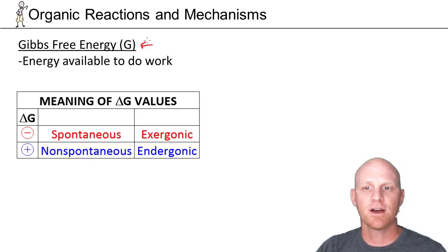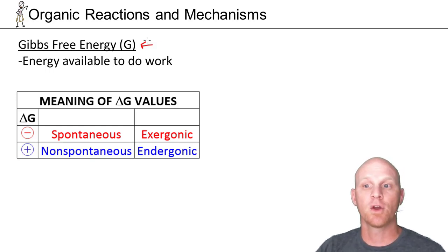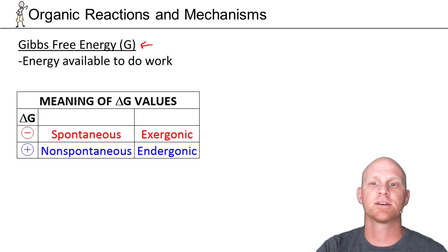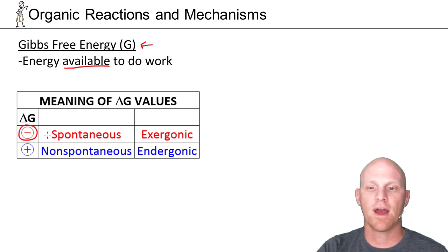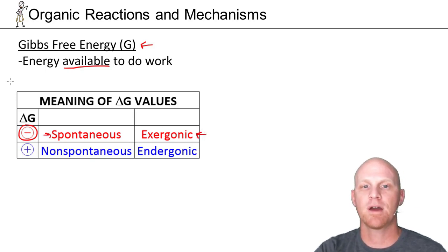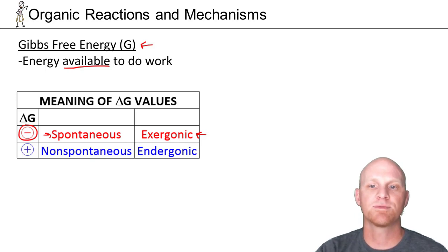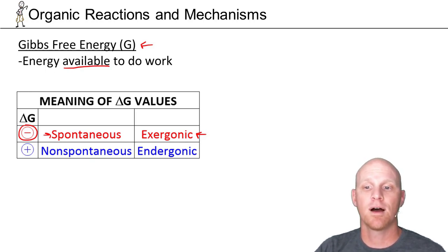They call it Gibbs free energy, and 'free' here you should think of as meaning 'available' — like are you available on Friday night for dinner? Gibbs free energy is the energy that is available to do work. The big point: when the delta G of a reaction is negative, that reaction is spontaneous, and the word we use for it is exergonic. Delta G negative means it's a spontaneous reaction — it will happen, and it's exergonic.